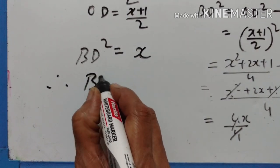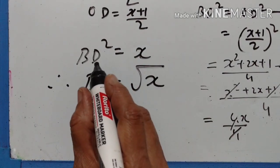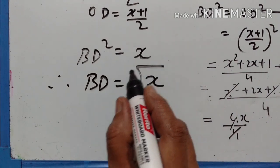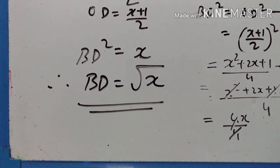Therefore BD squared equals x. Taking square roots on both sides, BD equals the square root of x.